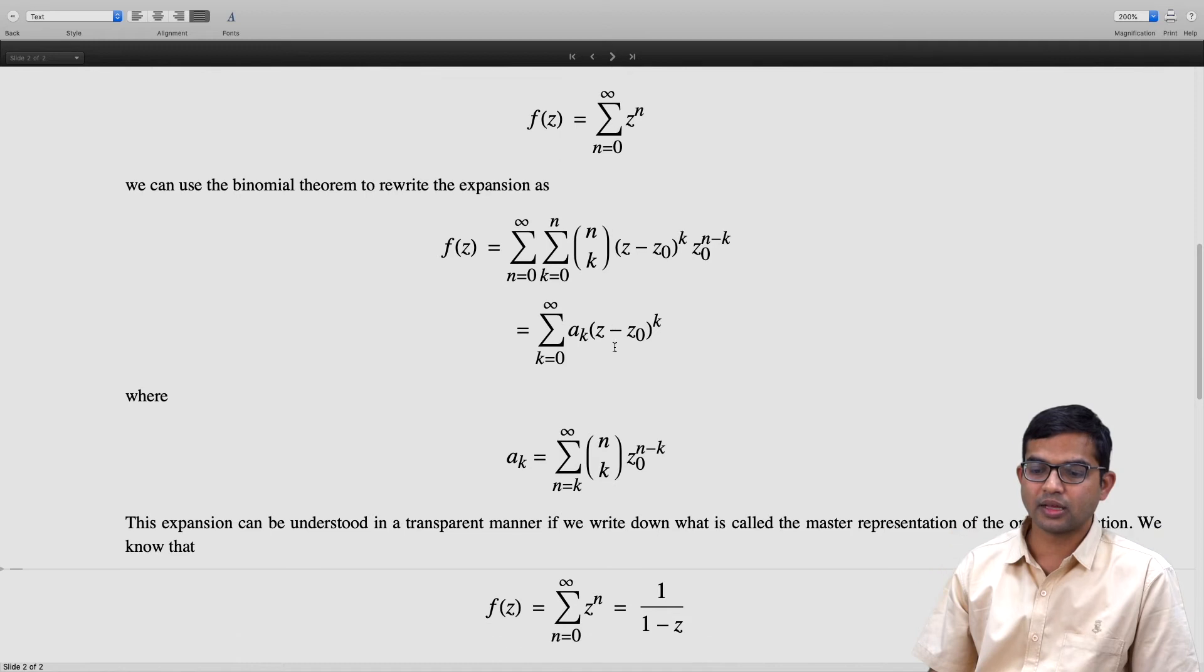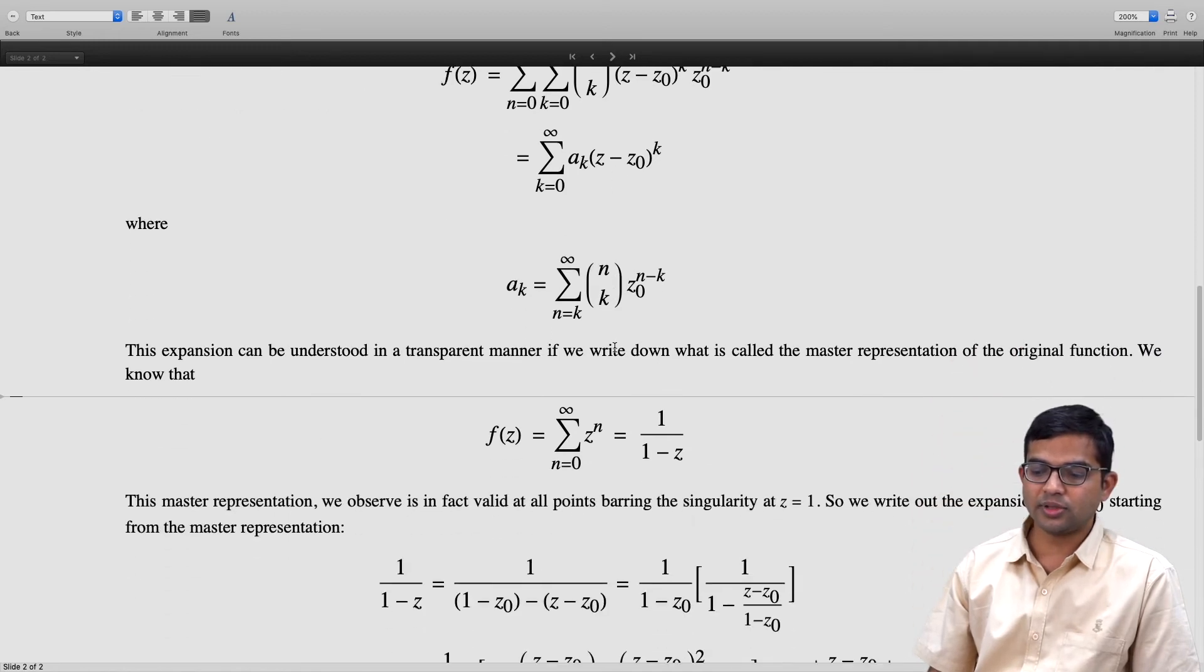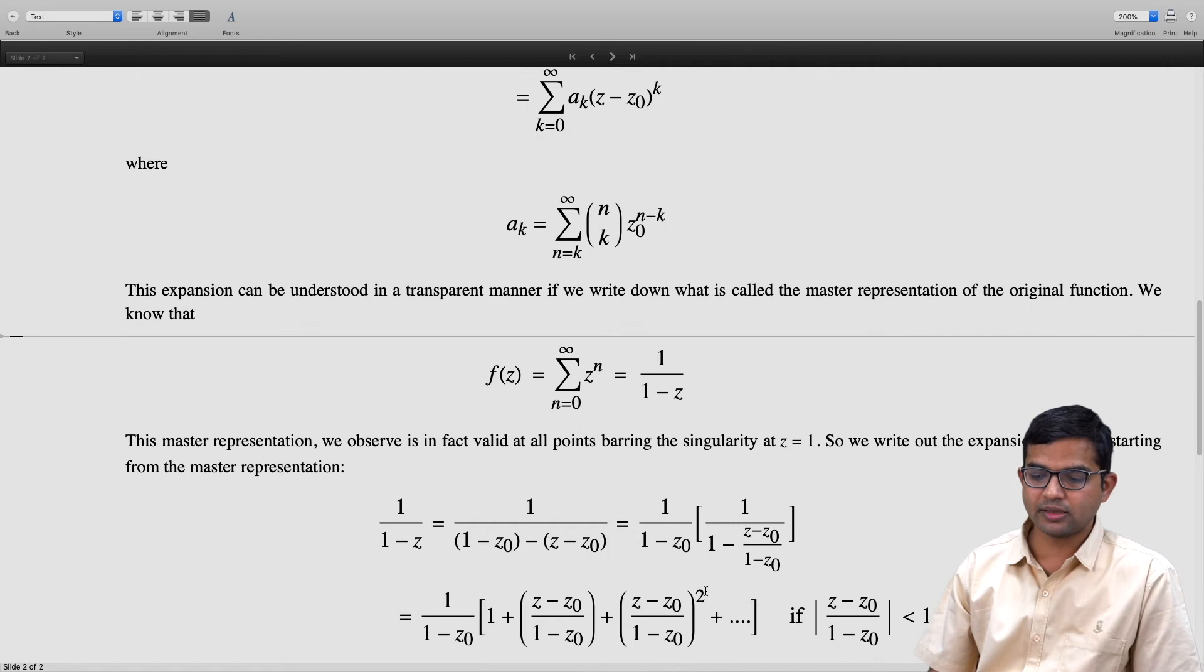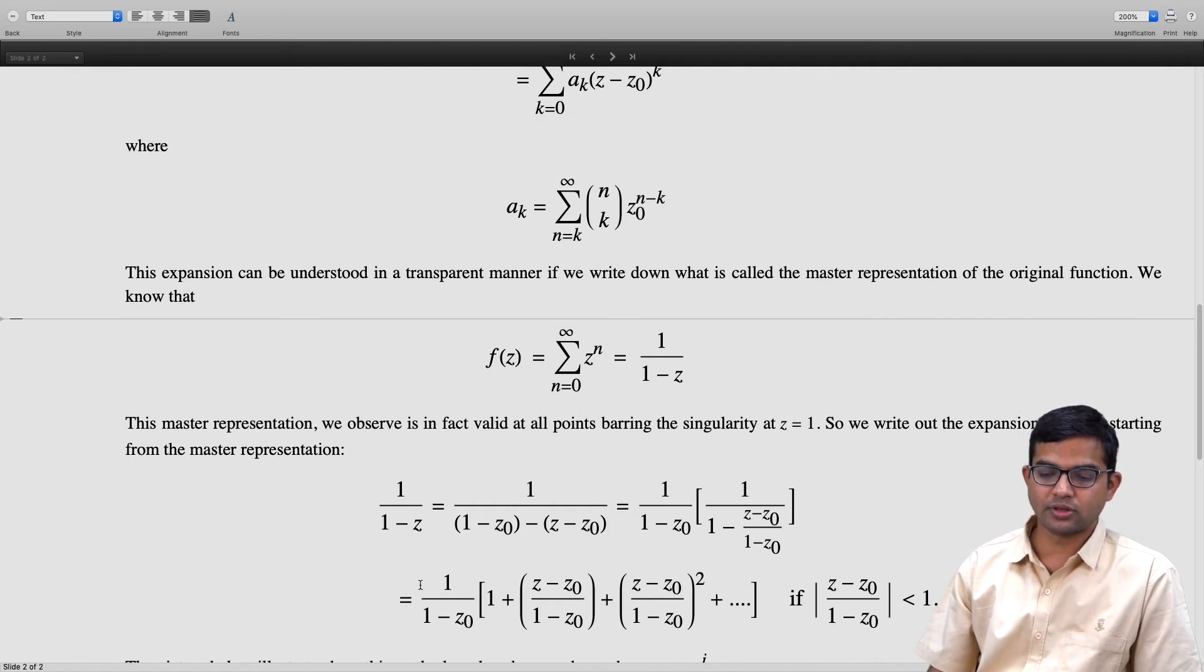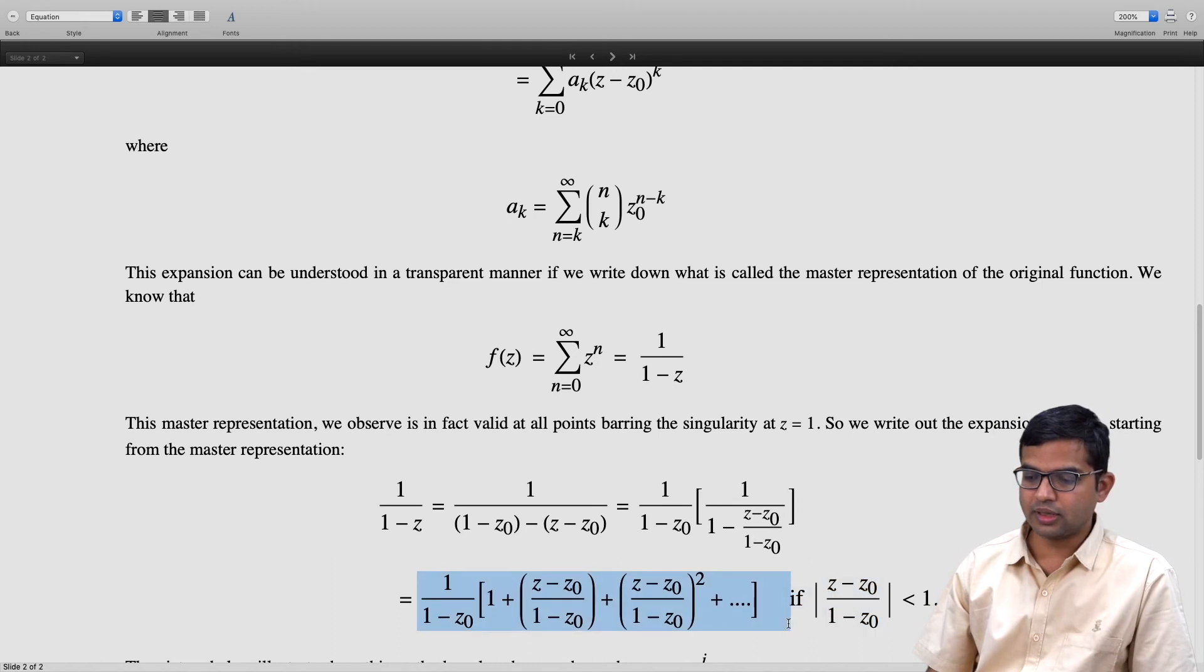As long as mod of (z-z₀) divided by mod of (1-z₀) is less than one, it is in fact valid for us to expand this as this kind of an expansion. Now this is valid in a different circle of convergence.